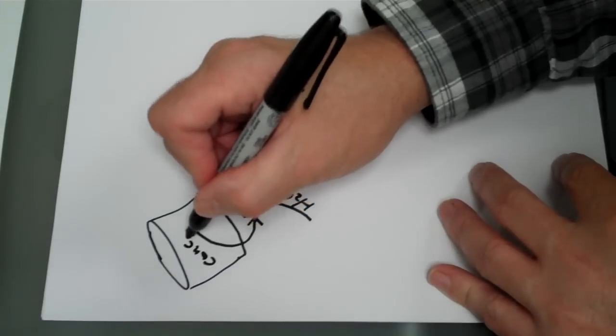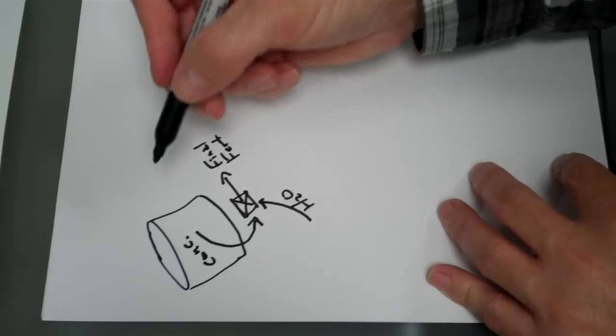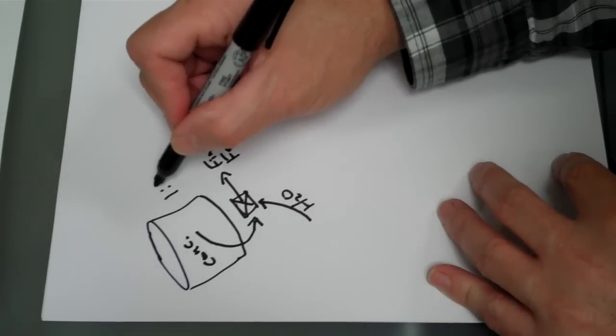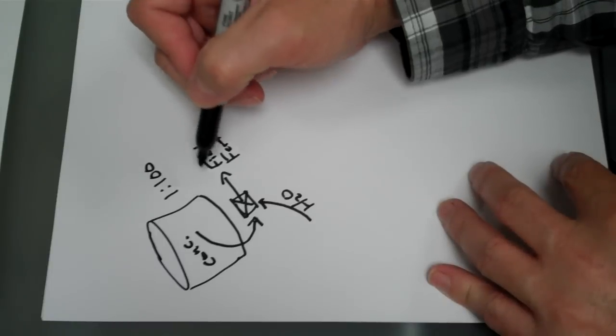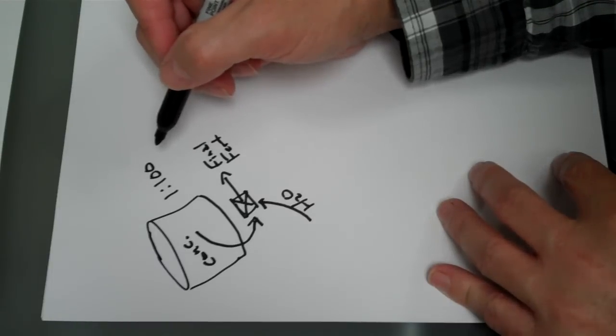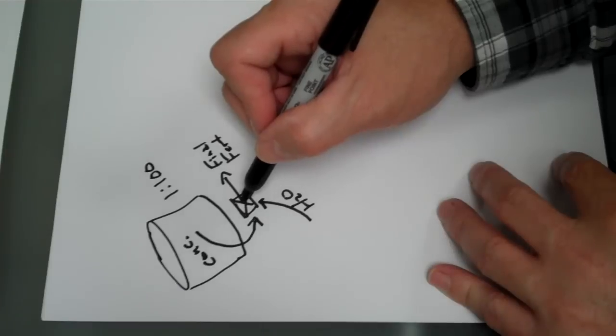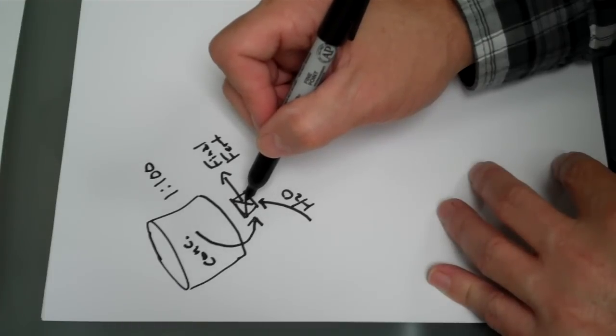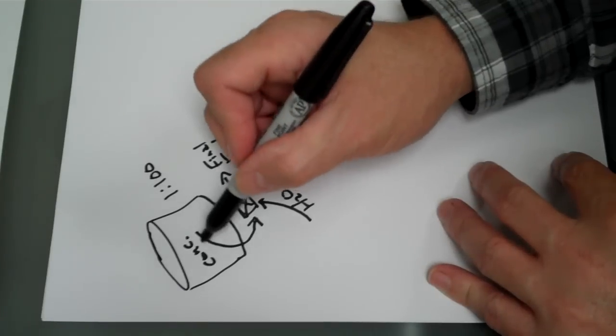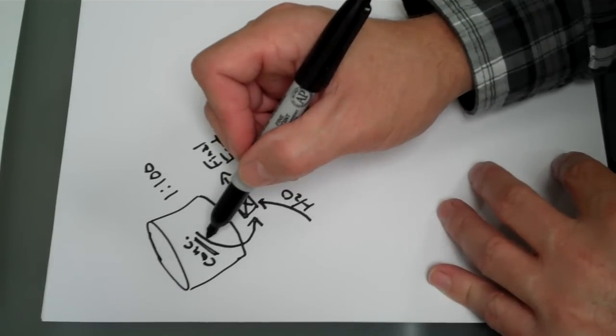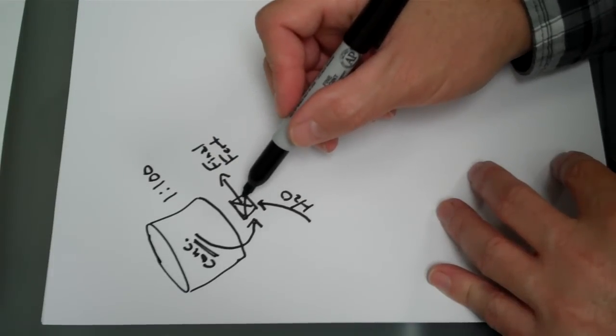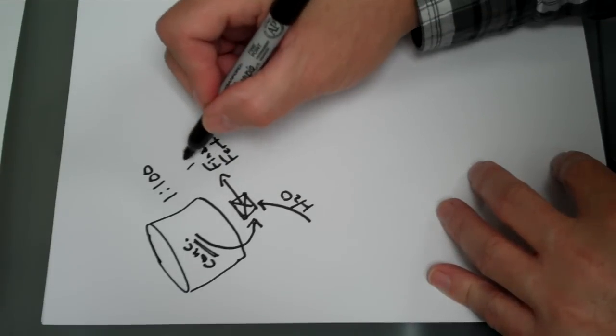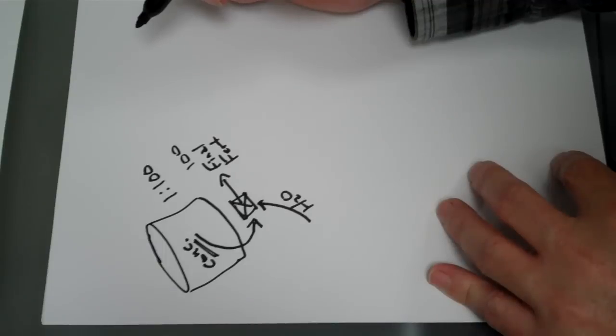So this is concentrated. So for example, when we say something is a 1 to 100 injector, or you're injecting at a 1 to 100 ratio, we mean this injector is taking one part of this fertilizer concentration and adding it to water to produce 100 parts of final fertilizer solution.